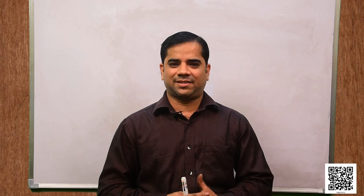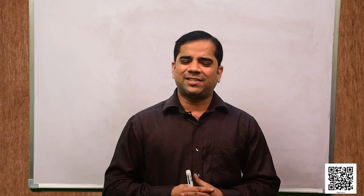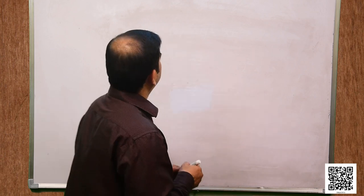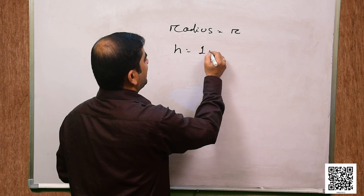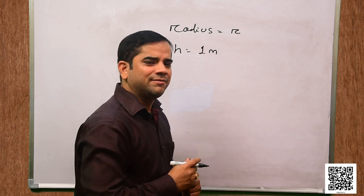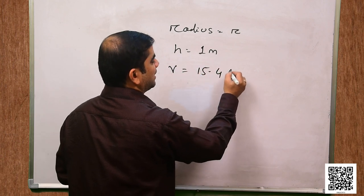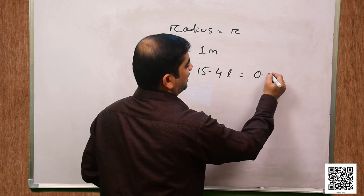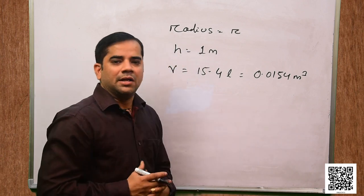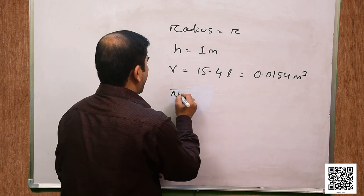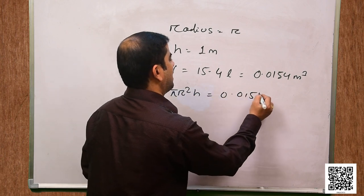Let us now discuss question number 6. The capacity of a closed cylindrical vessel of height 1 meter is 15.4 liters. How many square meters of metal sheet would be needed to make it? Let radius = r. Height h = 1 meter. Volume = 15.4 liters = 0.0154 meter cube. Volume = πr²h = 0.0154 meter cube.